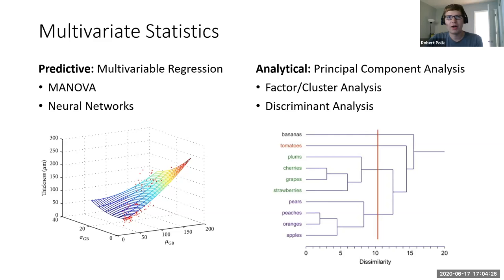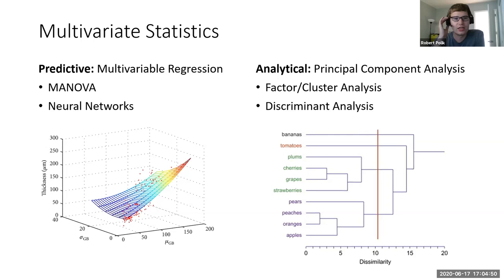Multivariate statistics — nothing too crazy. If you know basic statistics, the fundamentals involve doing regression to fit things and doing tests to see if things are similar or not. It's a way to take a large set of messy data and actually interpret it. When it comes to multivariate statistics, you can divide it into two categories. The predictive category falls under the idea of multivariable regression — you take your data points, fit a model to it, and for any point on that model, you can make a prediction for your output.